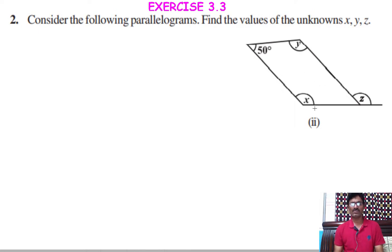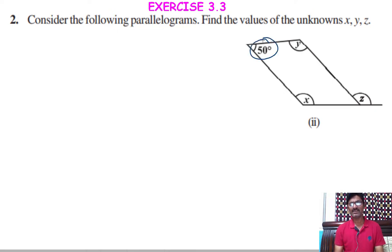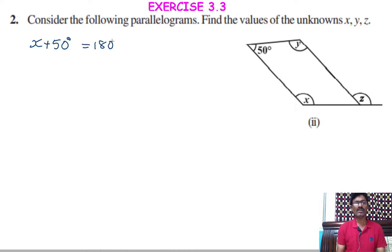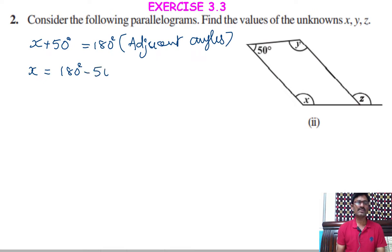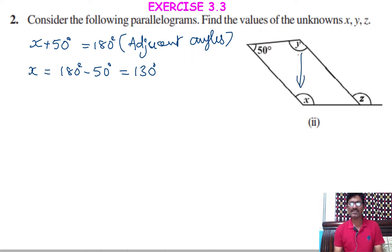In this diagram also we need to find the values of X, Y and Z, given that this is a parallelogram. By using angle properties in a parallelogram, first see the relation between 50 degrees and X — these two are adjacent angles. So X plus 50 equals 180 degrees. From this, X equals 180 minus 50, which equals 130 degrees. Now X and Y are opposite angles, so Y equals X equals 130 degrees. The reason is opposite angles.